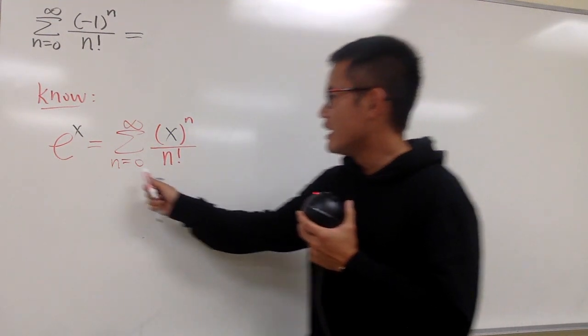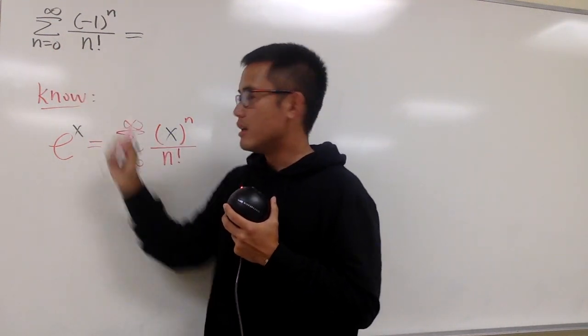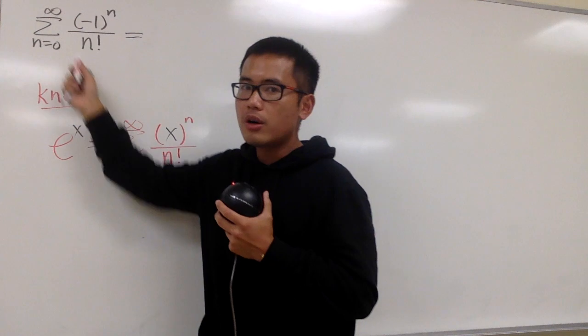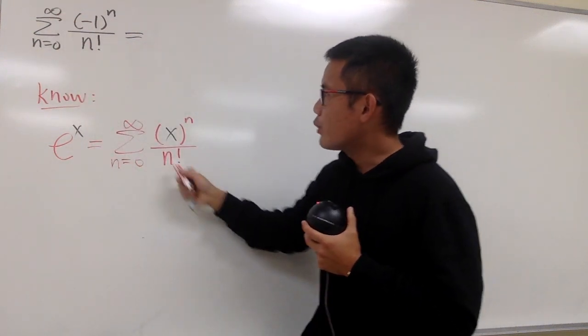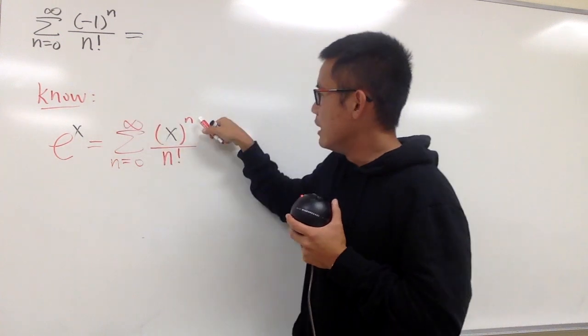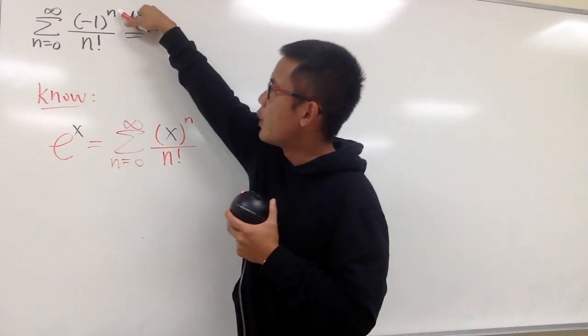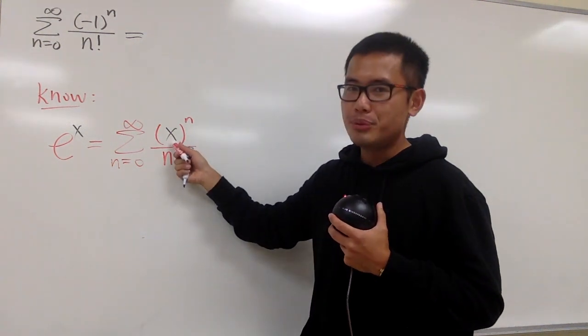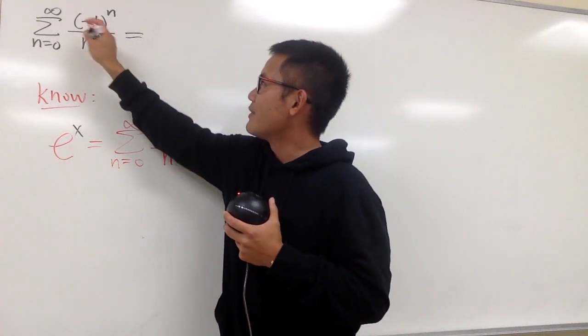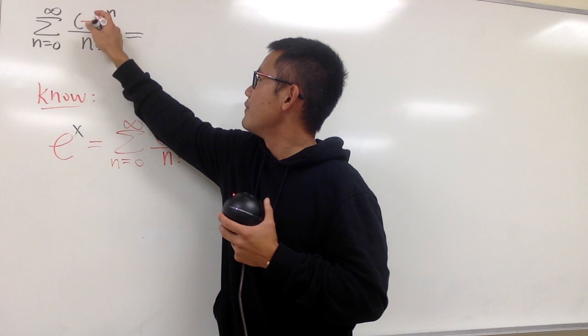And in this case, you see, right here they match exactly. n equals 0, n equals 0, and then infinity to infinity, of course. And then here we have n factorial, n factorial. The power is n right here, the power is n right here, and now what? You see, this is the input x. This is what we have, which is negative 1.